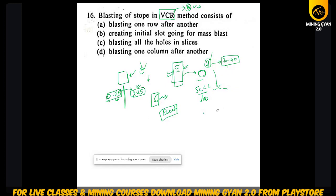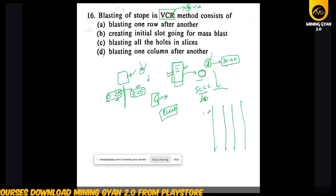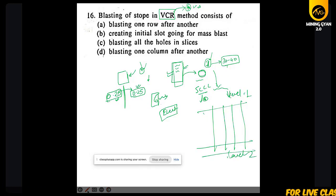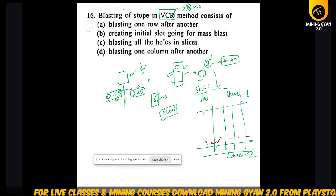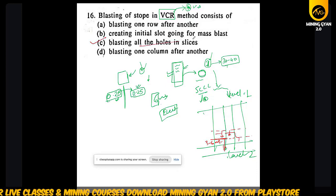In the VCR (Vertical Crater Retreat) method, we drill long holes from level one to level two. In this method we take a slice of 3 to 6 meters, put explosive and blast it, then take another slice, put explosive, blast it — blasting all holes in the slices.